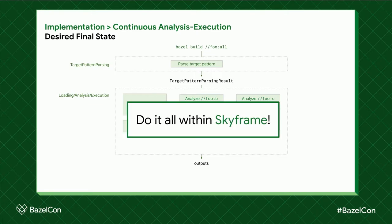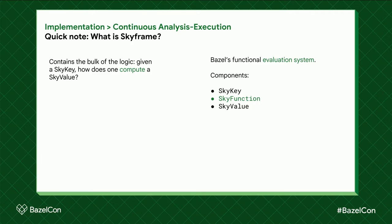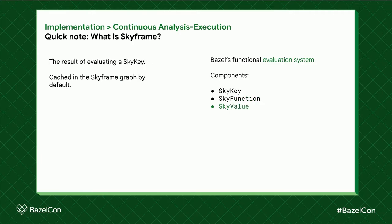The solution was to do it all within Skyframe. What is Skyframe? It is the core of Bazel — Bazel's functional evaluation system. If you imagine Bazel is a car, then Skyframe is the engine. It consists of three components: first, a SkyKey, which is lightweight and is basically the key to your node in the evaluation graph. A SkyFunction is where the bulk of the logic resides — given a SkyKey, you use the SkyFunction to compute a SkyValue. The SkyValue is the result you take away from Skyframe, and it is cached in the Skyframe graph by default for incrementality.